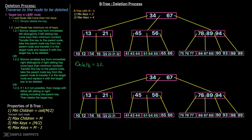Now Case 1.2: the target key is in the leaf node but the leaf node has the minimum number of keys. For example, the node containing 14 and 15 is a leaf node with exactly 2 keys — the minimum. Let's try to delete 14. There are three options to handle this situation: 1.2.1, 1.2.2, and 1.2.3.